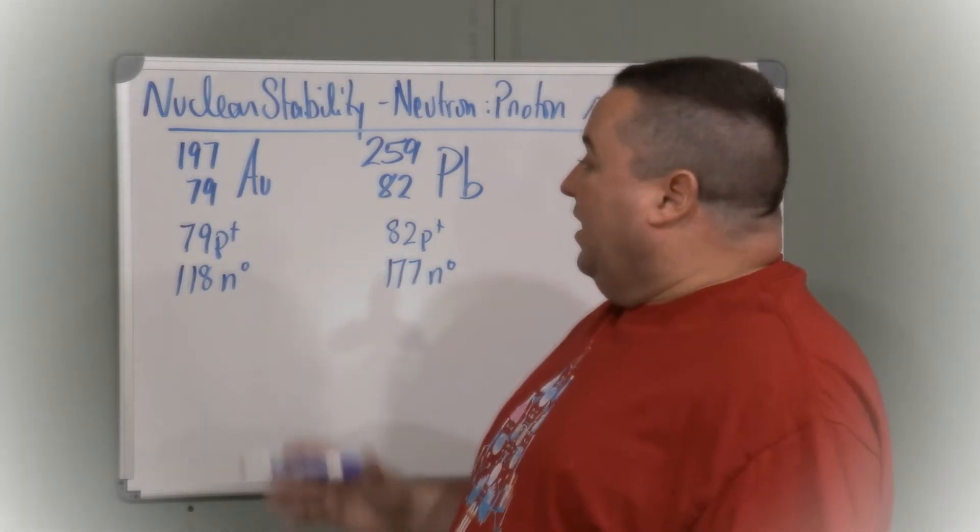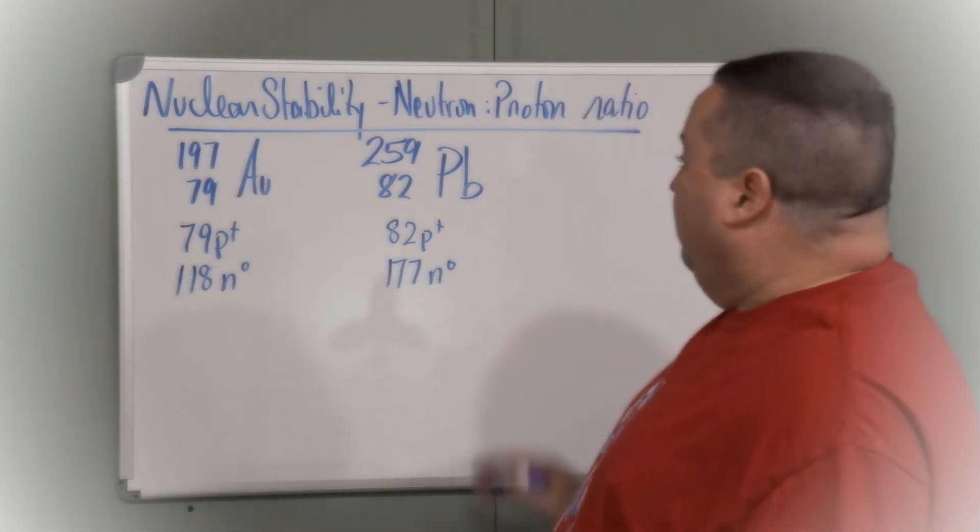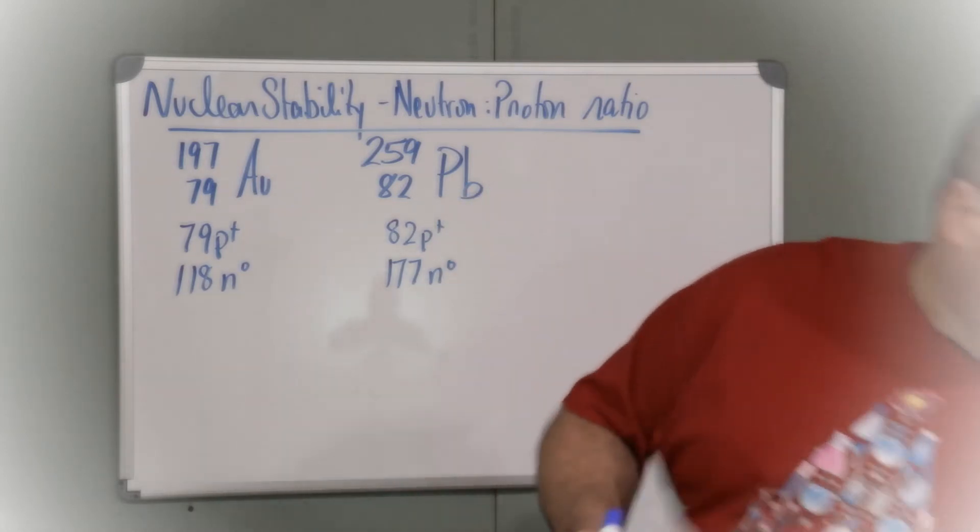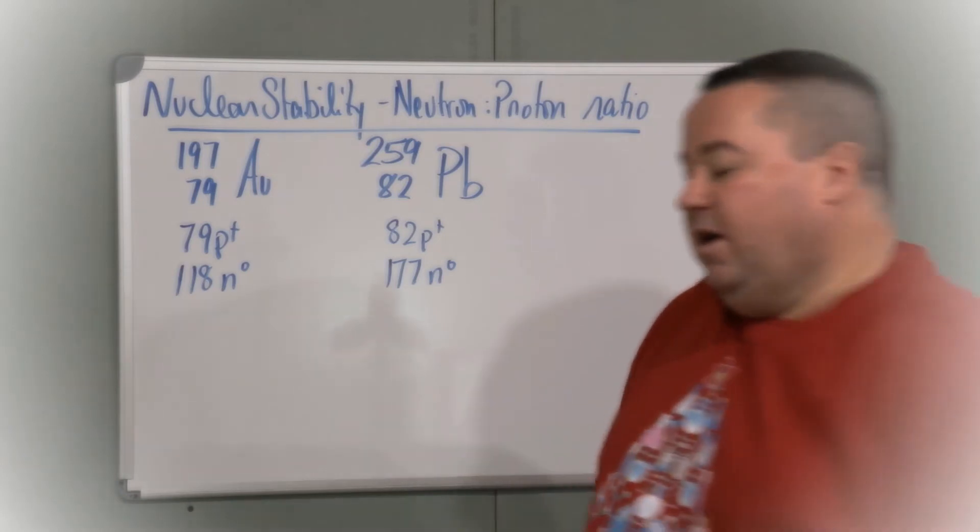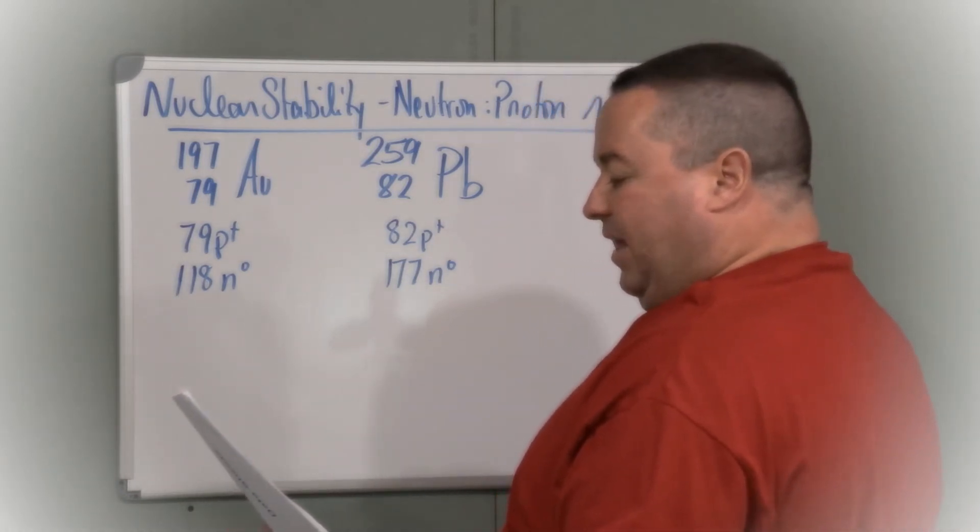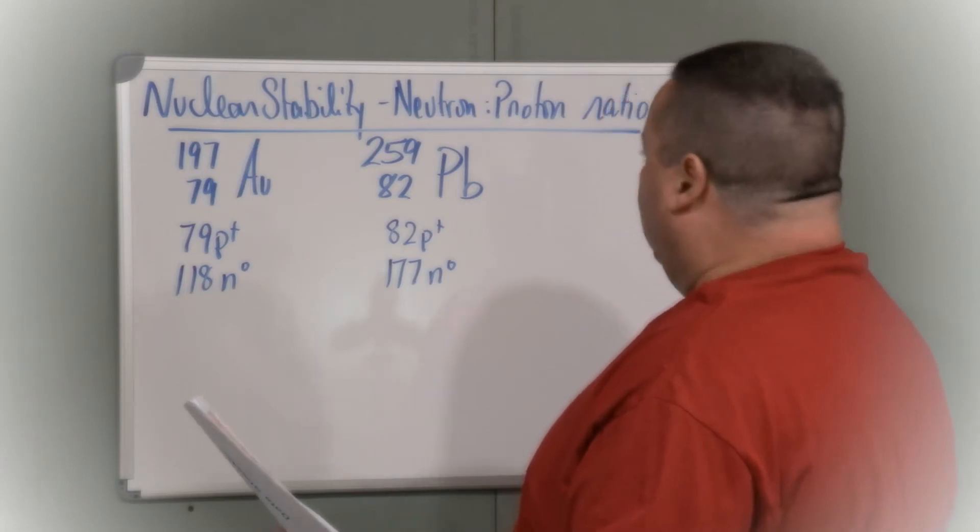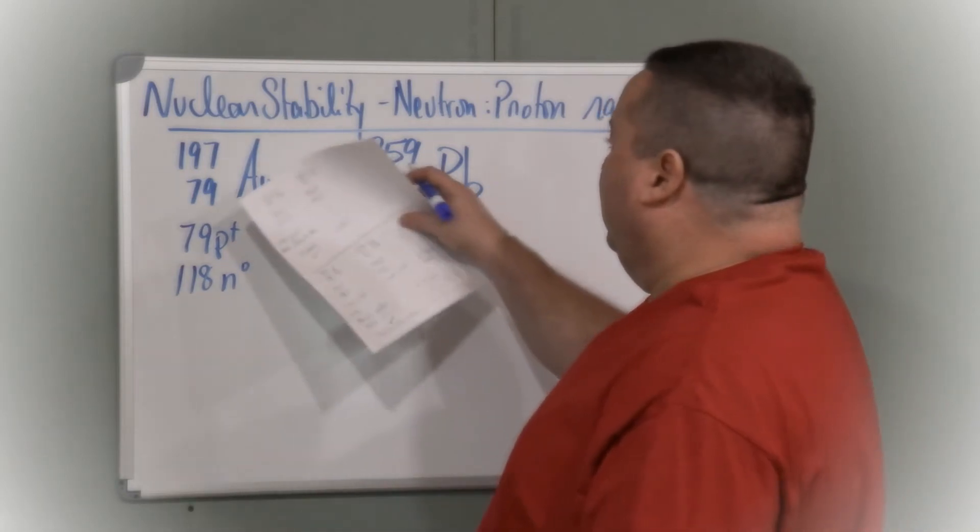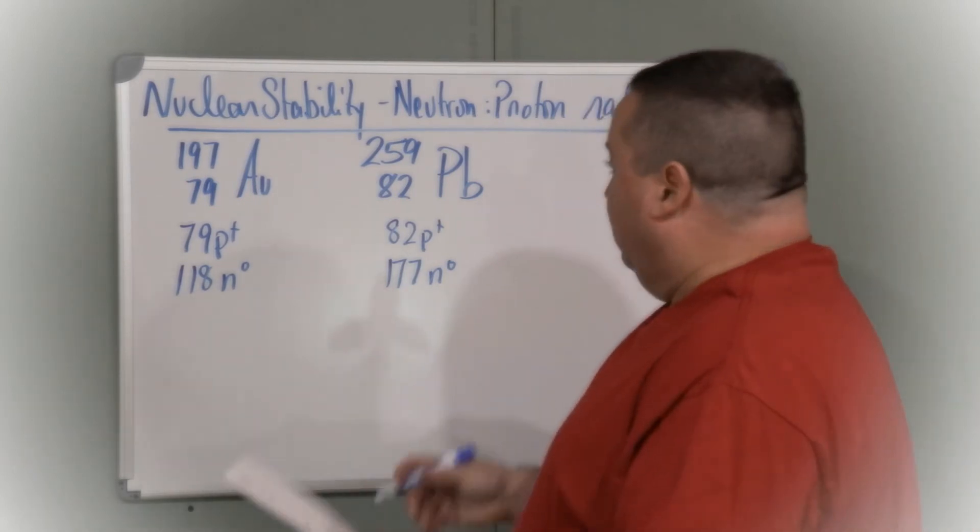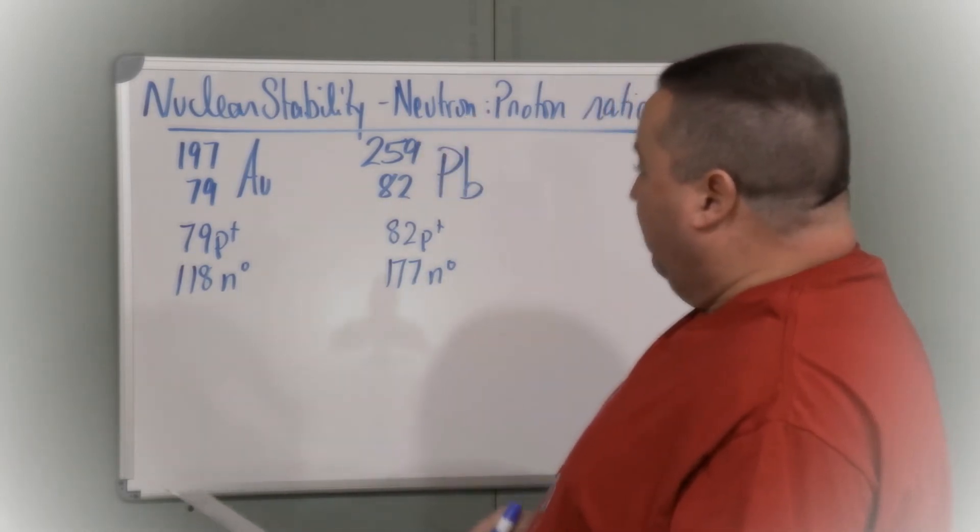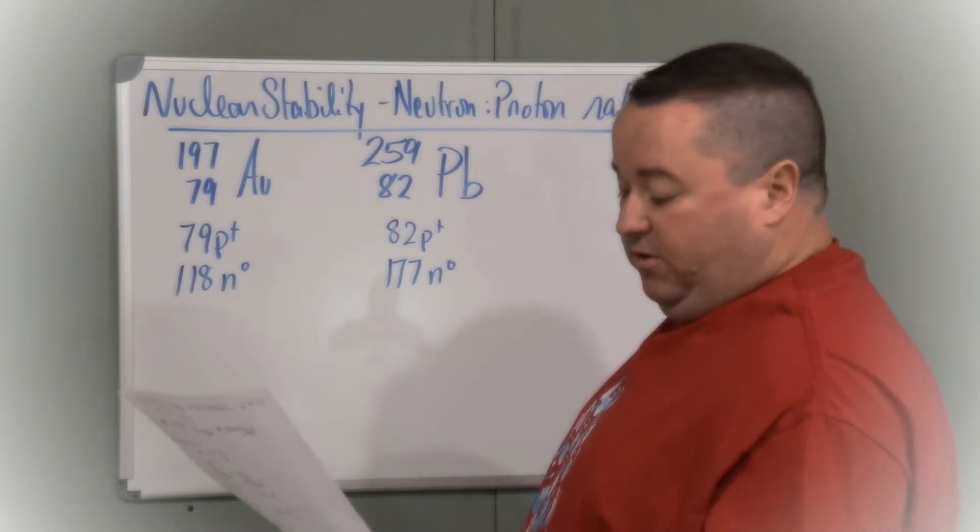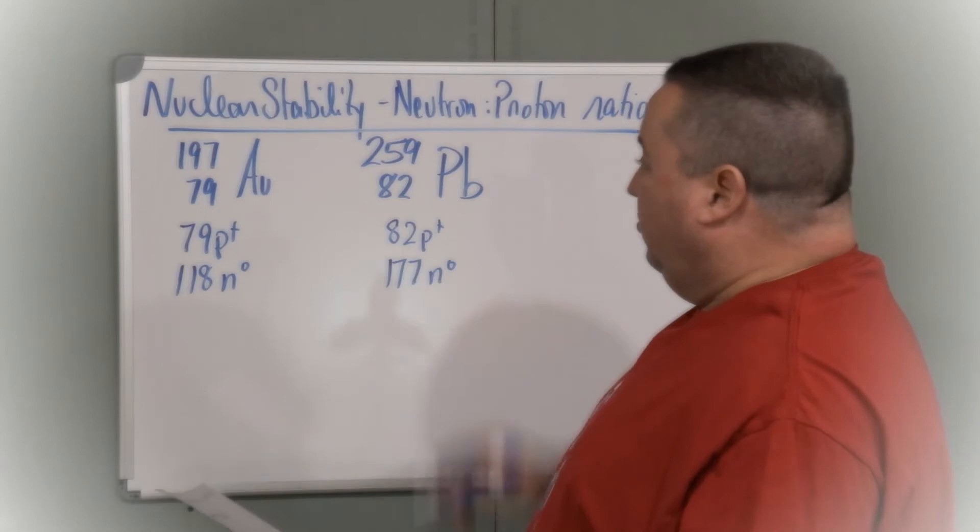But when I look at lead, what's the atomic number for lead from the periodic table? The atomic number for lead is 207.2. This is way beyond the 207. The neutron to proton ratio here is much bigger than 1.5 or 1.6 to 1. It's about 2.2 to 1.